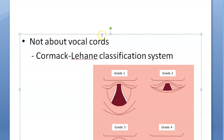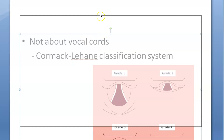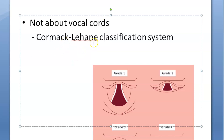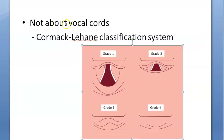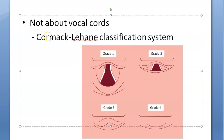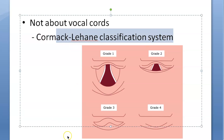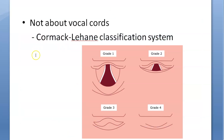Remember, this Mallampati score is not about the vocal cords. The vocal cords have a different classification system — that is the Cormack-Lehane classification system, which is a different topic.